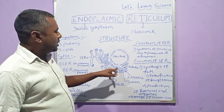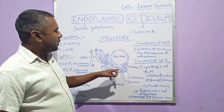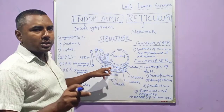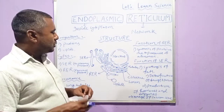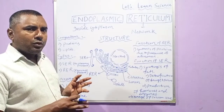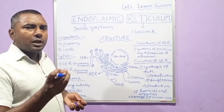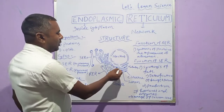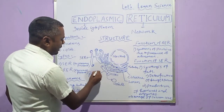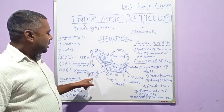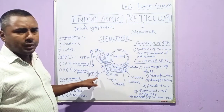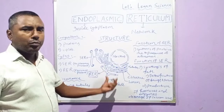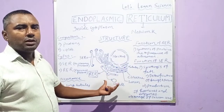You can see some dots on the surface of this endoplasmic reticulum. These dots are ribosomes attached to the surface of the endoplasmic reticulum. The endoplasmic reticulum on which ribosomes are present is called RER, which is the abbreviation for Rough Endoplasmic Reticulum. Because ribosomes are present on its surface, it is called rough.